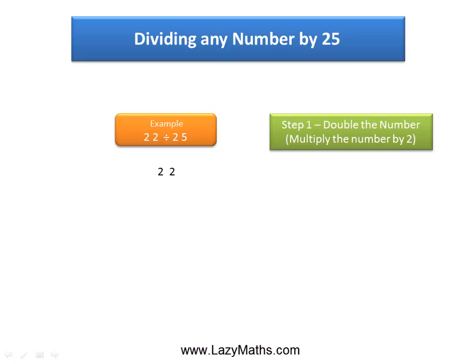The first step is to double the number 22. Double of 22 is 44. This is called the intermediate number 1.